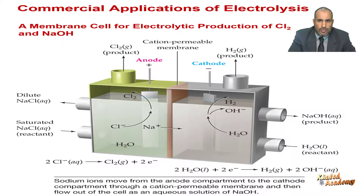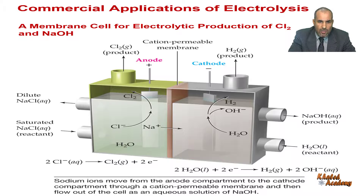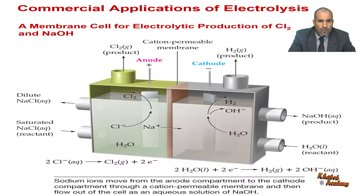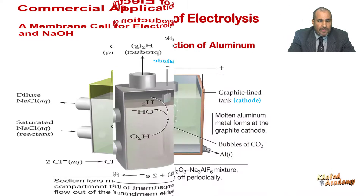A chloride ion is oxidized to chlorine gas at the anode, and water is converted to hydrogen gas and OH⁻ ions at the cathode. Sodium ions move from the anode compartment to the cathode compartment through the cation-permeable membrane and then flow out of the cell as an aqueous solution of sodium hydroxide.